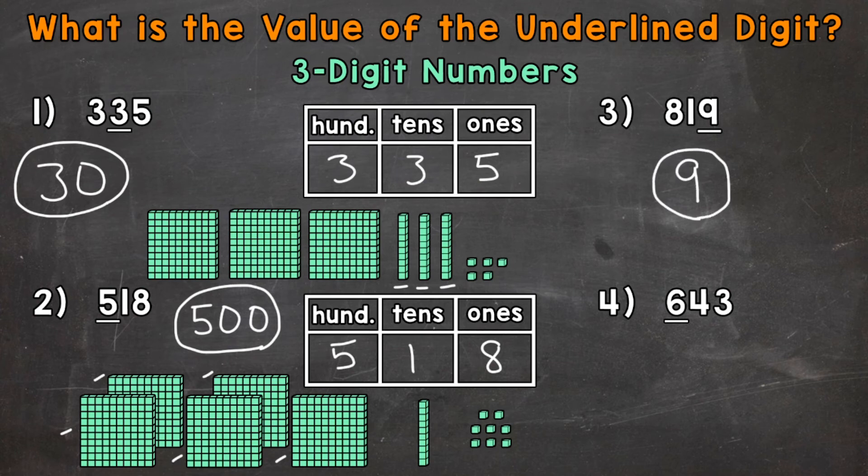Lastly, number four, we have 643. The six in the hundreds place is underlined. So we want the value of that six.